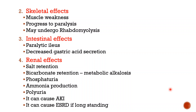Regarding intestinal effects, paralytic ileus is seen, again due to impaired muscle contraction caused by hypokalemia. There is also decreased gastric secretion, because potassium is required to pump hydrogen ions out of gastric parietal cells via the hydrogen-potassium exchange pump. Hence in hypokalemia, less gastric acid secretion occurs.